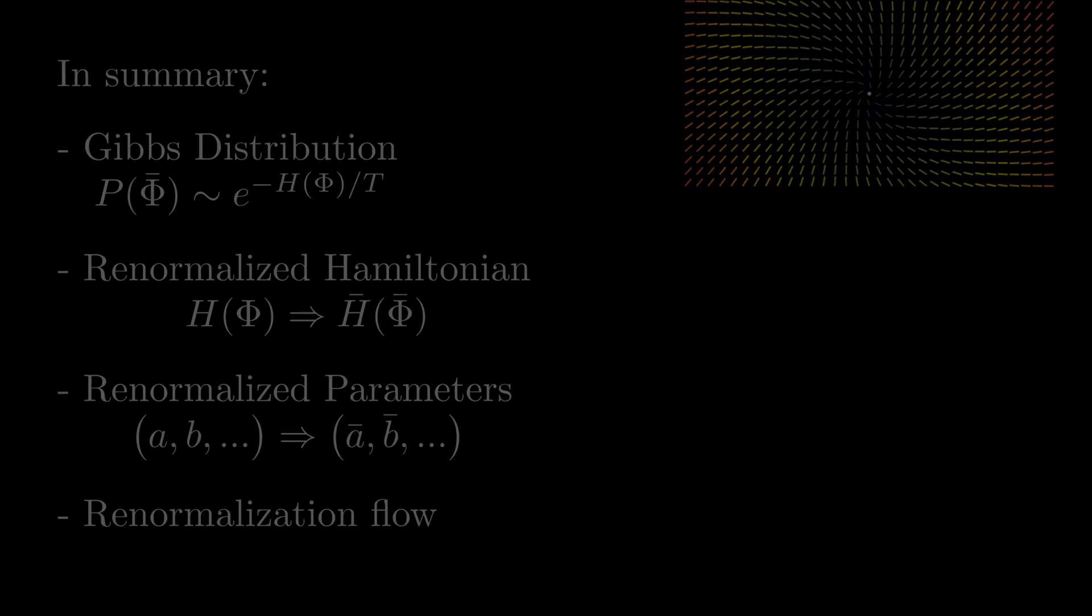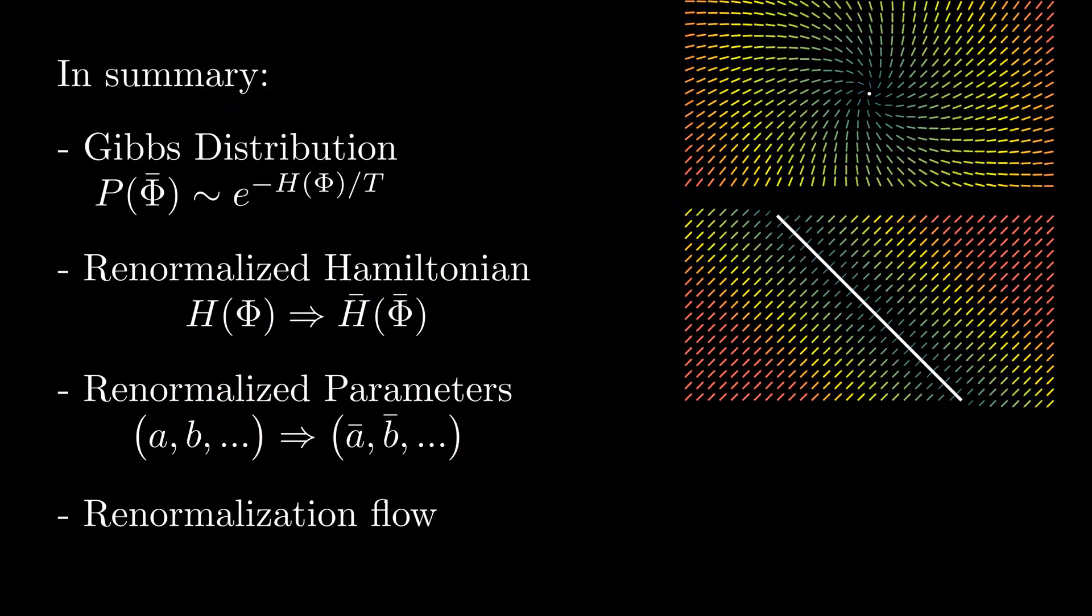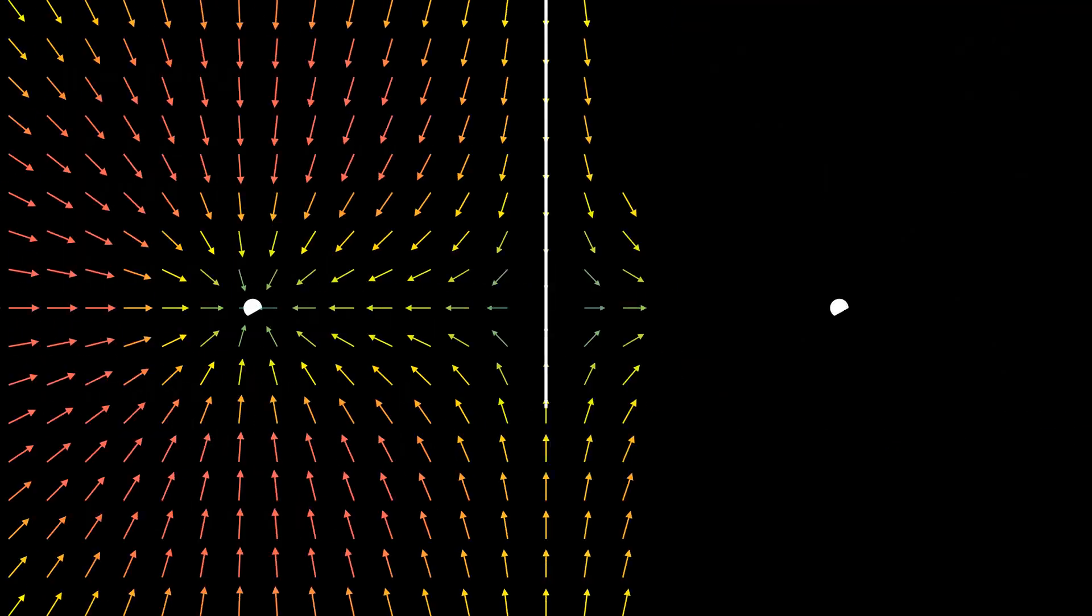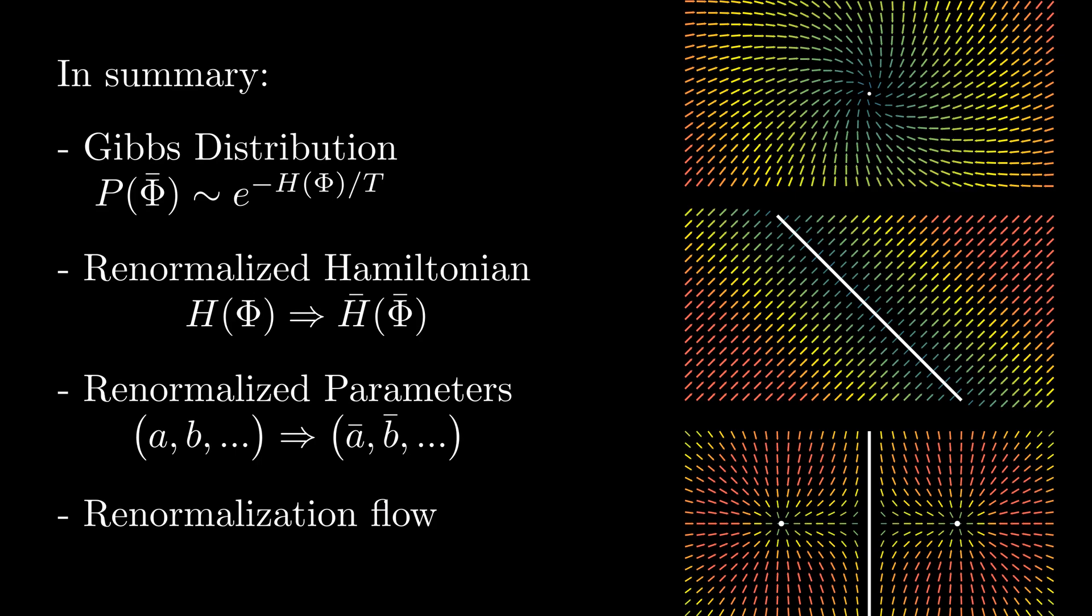The existence of fixed points in this flow is what makes the properties of macroscopic materials simpler than their microscopic components, and boundaries between regions that flow to different fixed points are what produce the boundaries we see between phases of matter.